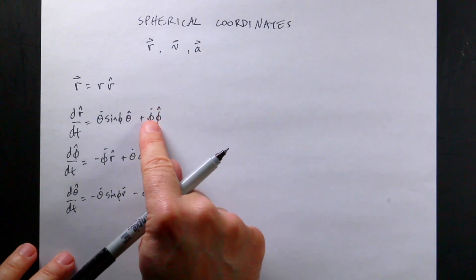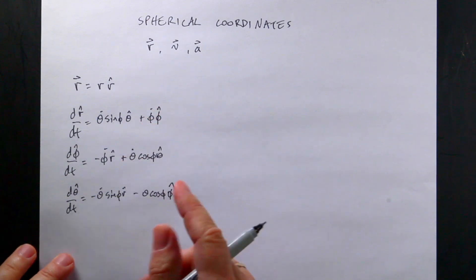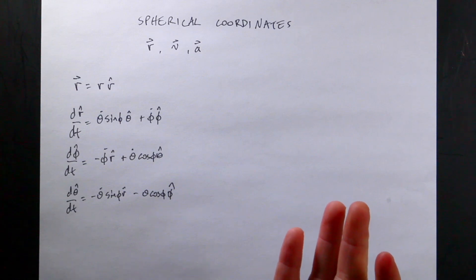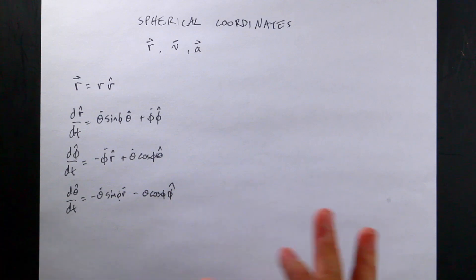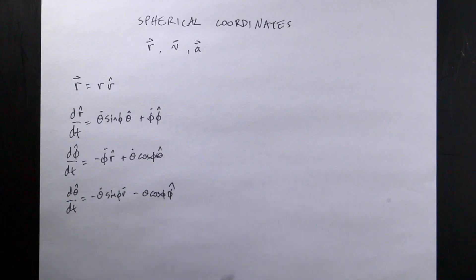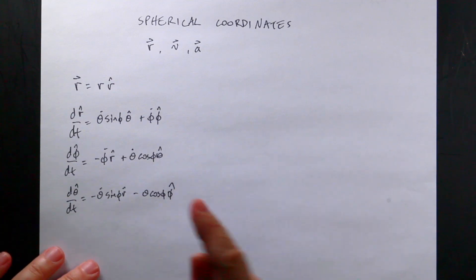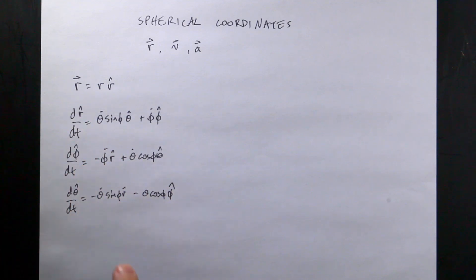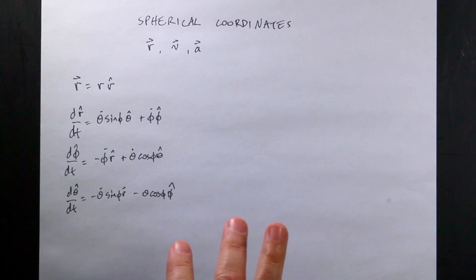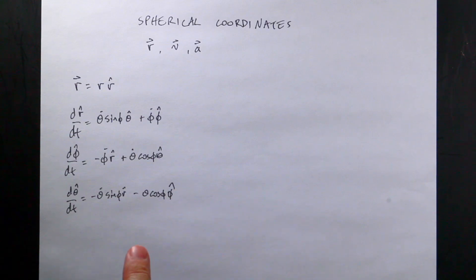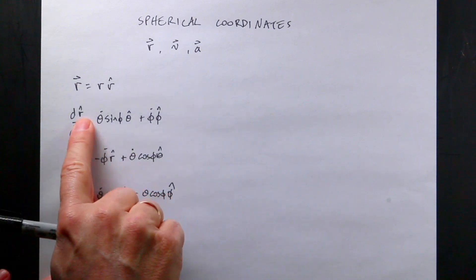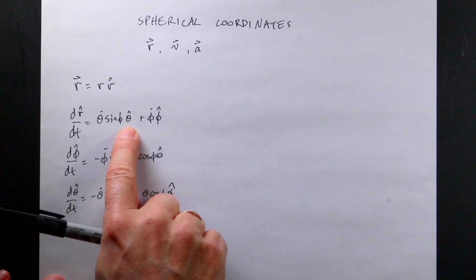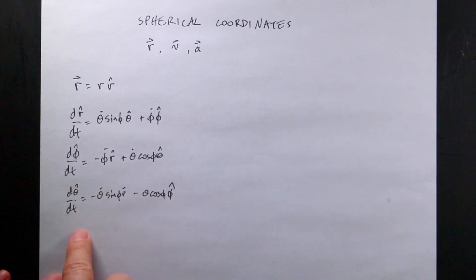I'm using phi to represent the angle between the z-axis and the position — some people use theta for that. In the first video, I derived r-hat, phi-hat, and theta-hat in terms of Cartesian coordinates. We do that because the time derivatives of Cartesian coordinates are constant — they don't change direction. But the spherical unit vectors do change direction, so in my second video I took the derivative of r-hat, phi-hat, and theta-hat with respect to time and expressed them back in spherical coordinates.